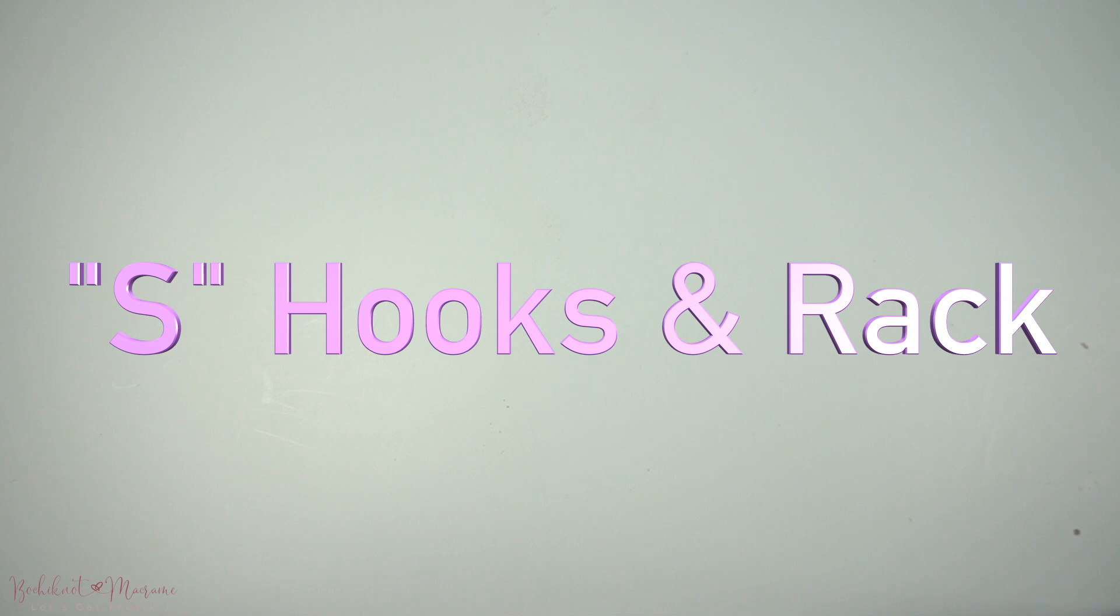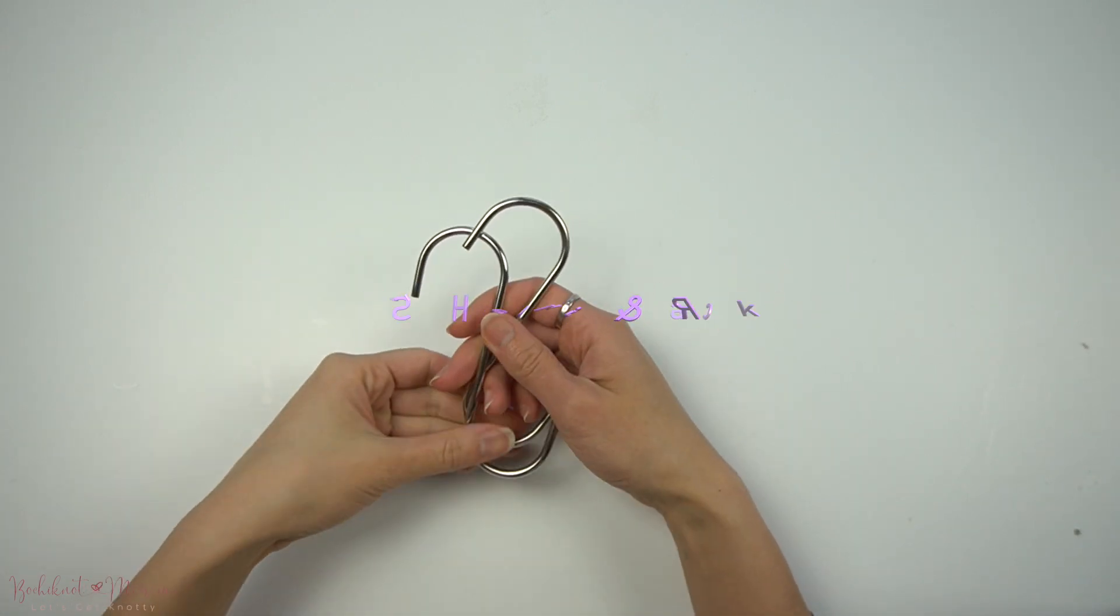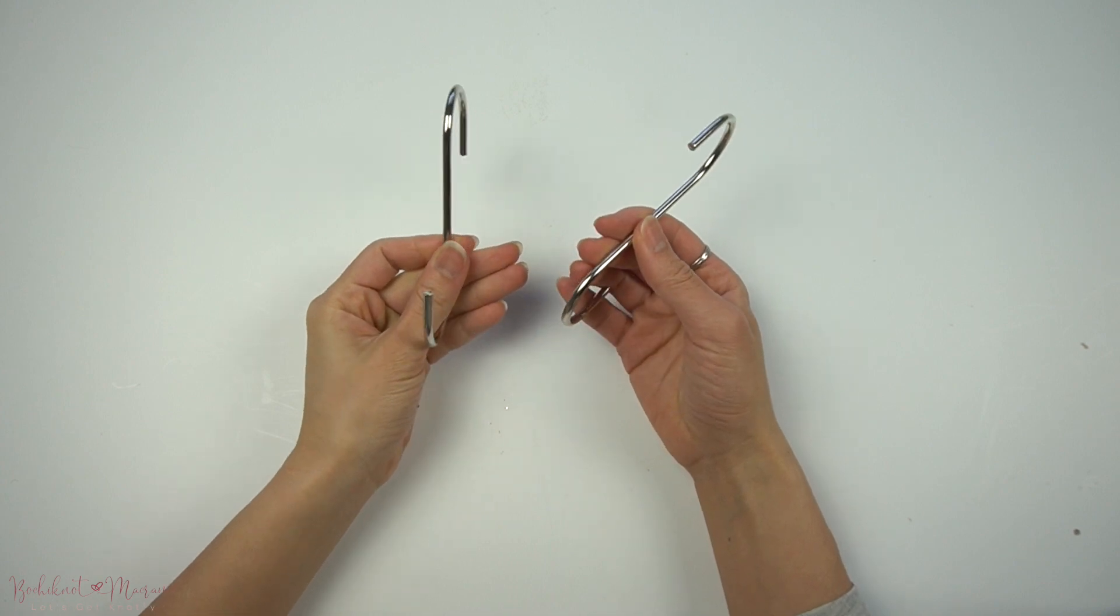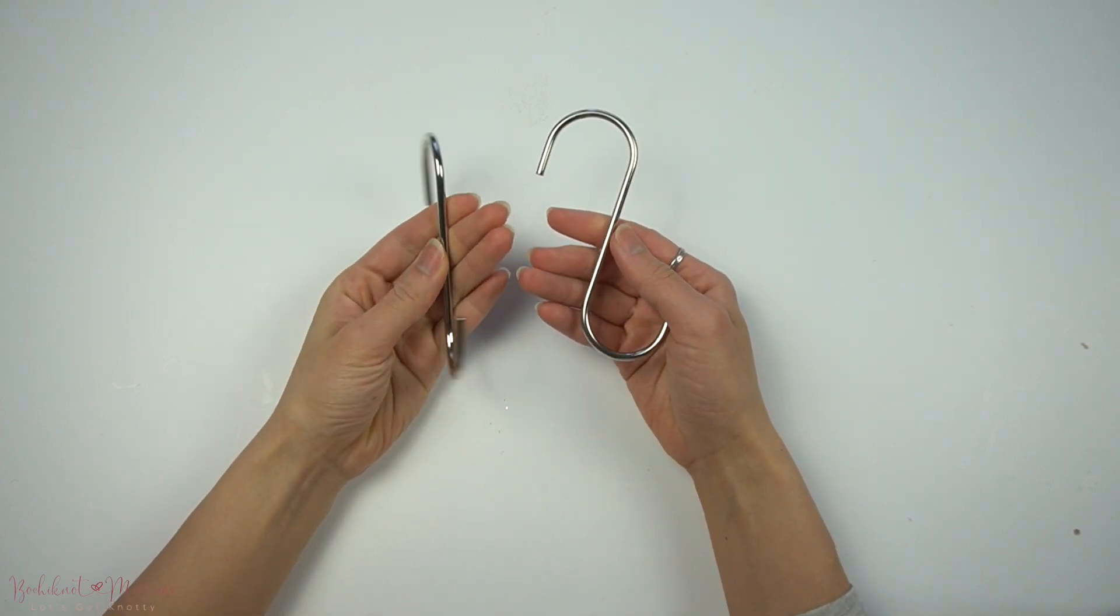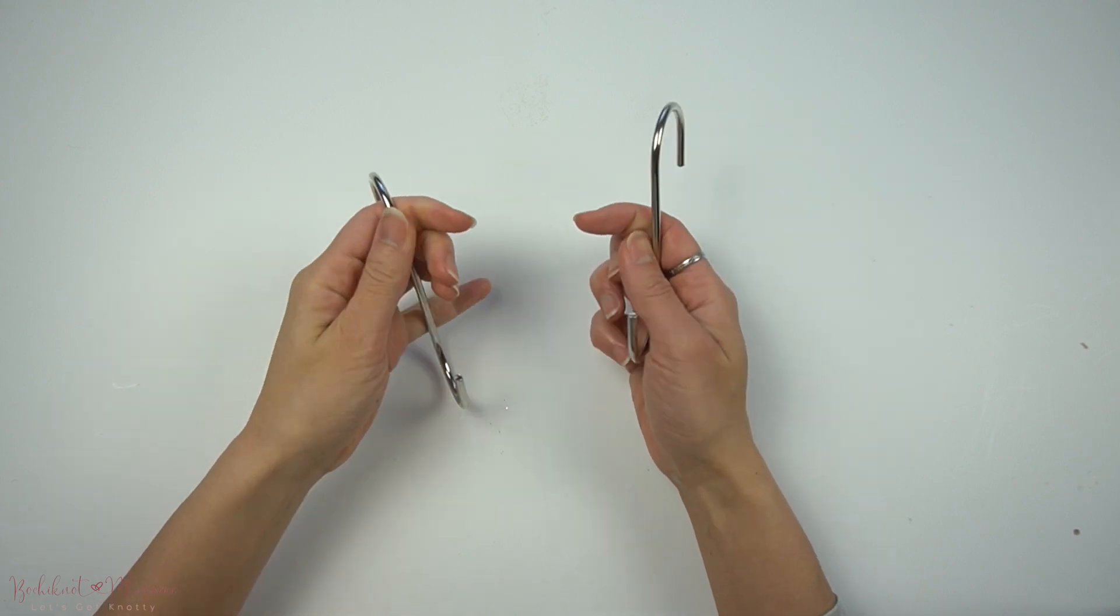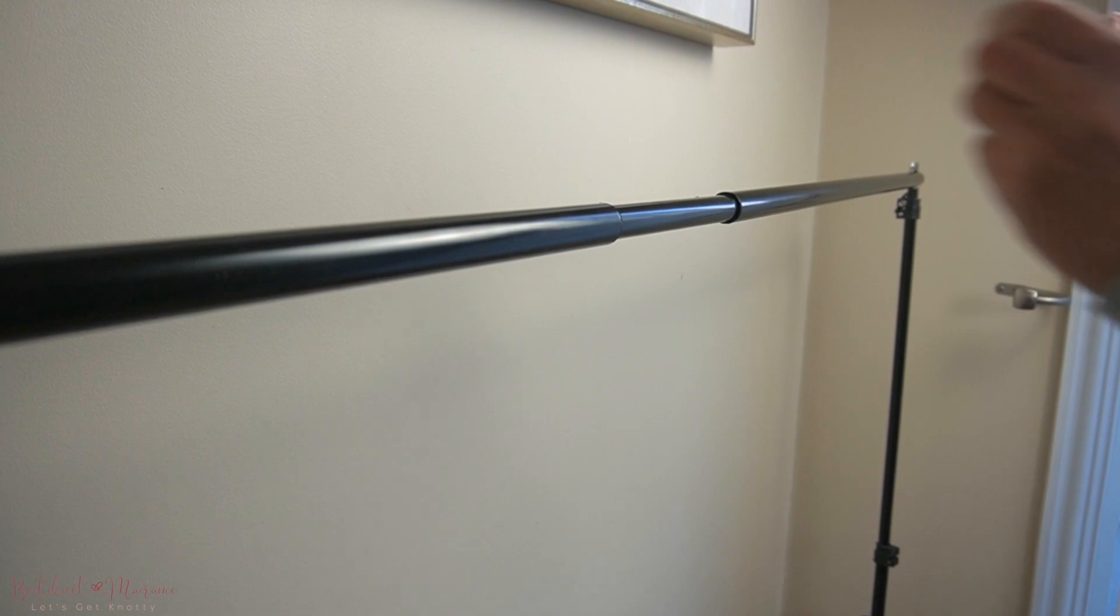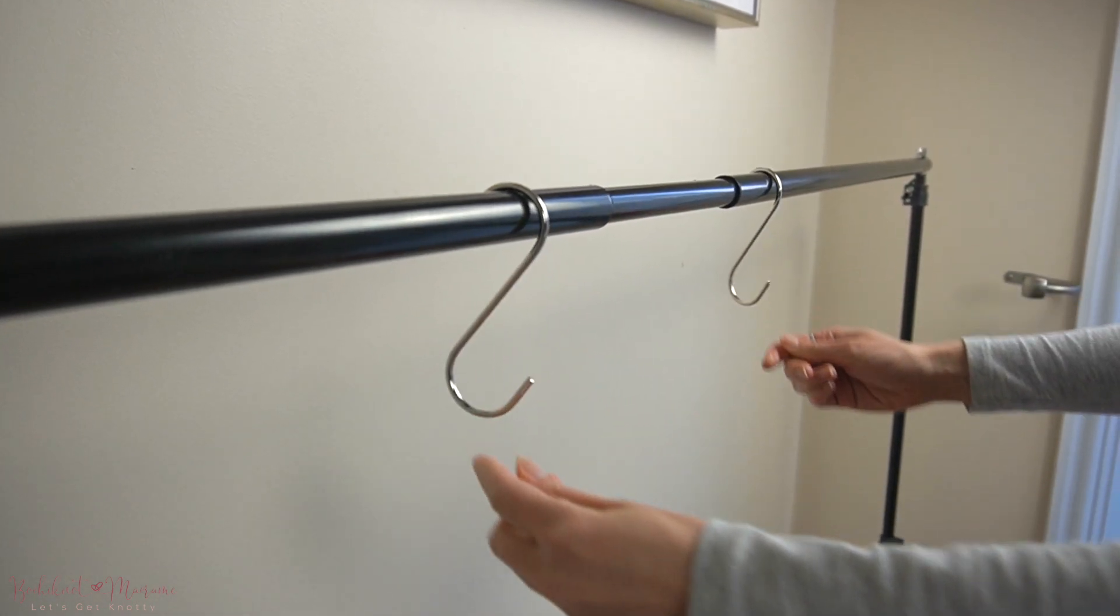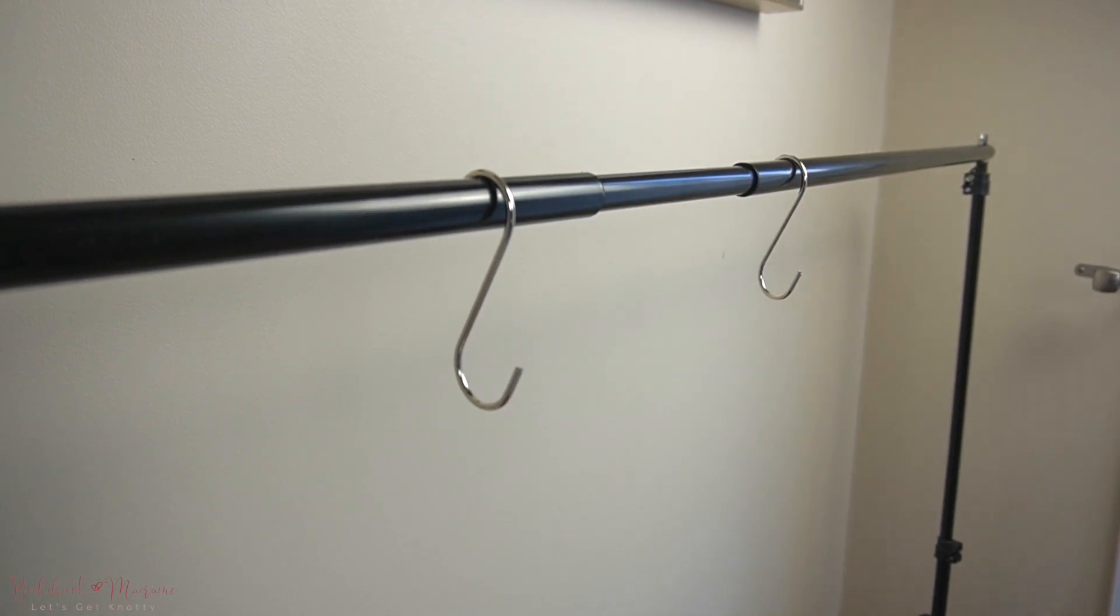Last but not least, if you want to work on your project while it's hung up, and this is great for any kind of wall hanging, plant hanger, or macramé bag, then you will require some S-hooks to place onto a rack of some sort. Most people use clothing racks to hang up their projects.